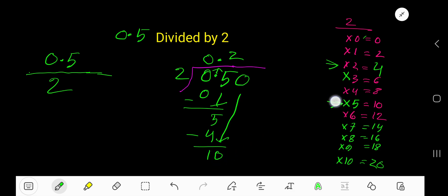2 goes into 10 how many times? 2 goes into 10, 5 times. 5 times 2 is 10.